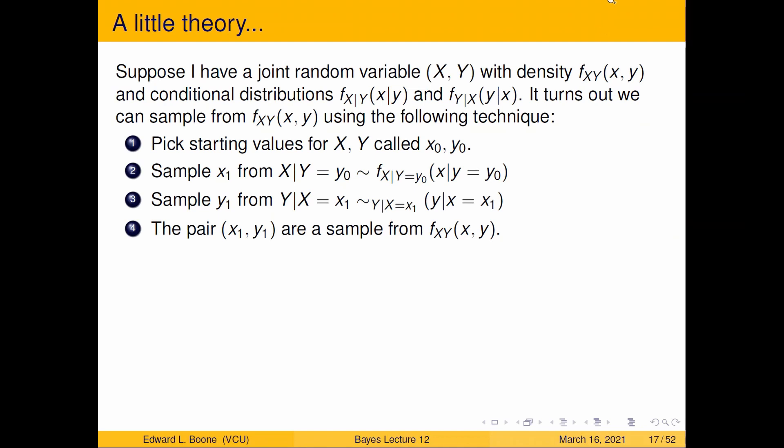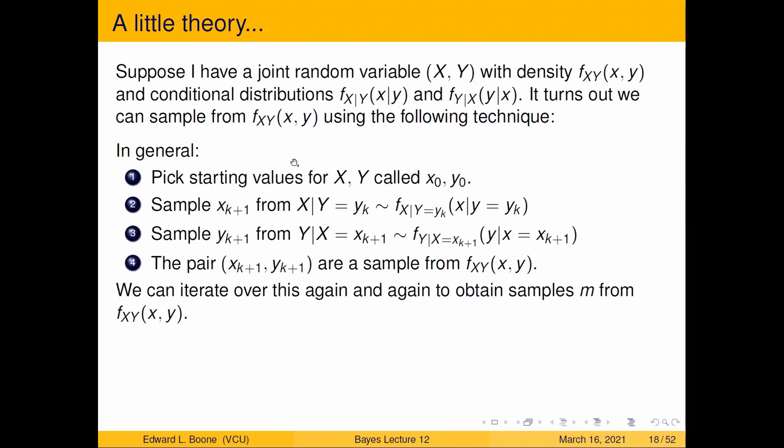So for Gibbs sampling, we're going to talk a little bit about the theory here. If I have some starting values x0 and y0, and I sample x1 from X given y equals y0, and then I take that sample that I just got, this x1 that I just pulled, and then I pull from Y given x equals x1, then the pair (x1, y1) are a sample from the joint density. If we do this at any point, this is what's considered Gibbs sampling. It's pretty straightforward.